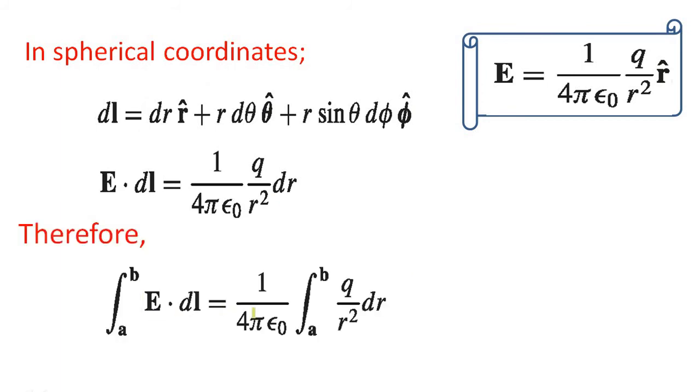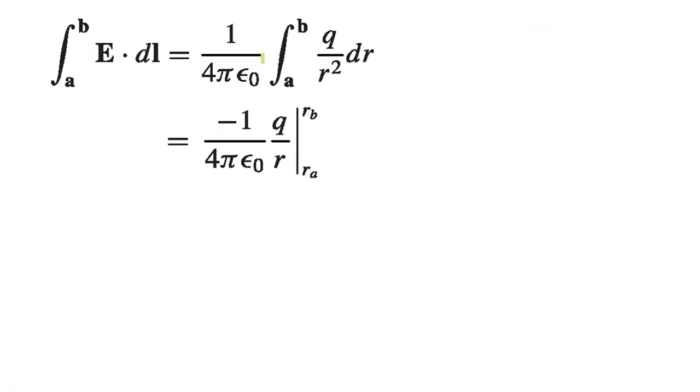Integral A to B E dot dL. In this term here 1 by 4π epsilon 0 is a constant, taken outside. Then this integral symbol is here. Remaining term is available here. Now when we are integrating, integral 1 by R square dr, integral 1 by R square dr is minus 1 by R.